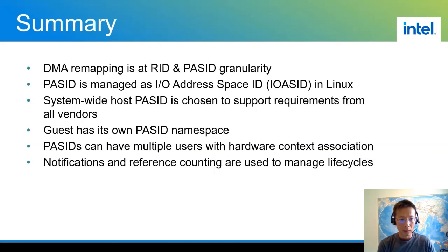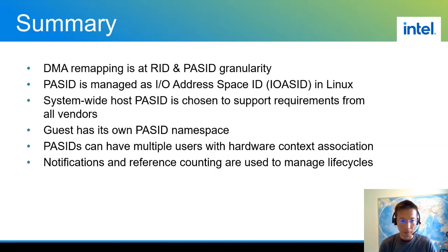In summary: we talked about DMA requests with PASID, where remapping is done at the request ID and PASID granularity. PASID in Linux is managed by IOASID core. We don't support multiple namespaces for PASID on the host, but the guest has its own PASID namespace. PASIDs can have multiple users, each with hardware context association, so we must synchronize them during setup and teardown using notification and ref counting to manage the lifecycles. Yi and I are ready for questions and more discussions on the two open items we have. Thank you.